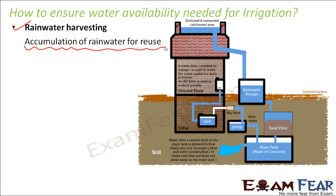Rainwater harvesting is very common these days because we do not want to waste water — whatever water we get from rain, we want to make use of it later. A rainwater harvesting system looks like this: the rainwater comes in from a building or house, gets stored in a rainwater storage tank, passes through a couple of filters, and then a pump takes it up to a tank. Once filtered and stored, the water can be utilized anytime later whenever required.